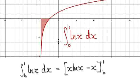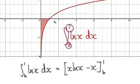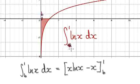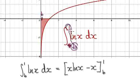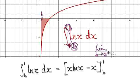We are trying to evaluate this from 0 to 1, but let's do it from an arbitrary point — let's say b. So let's integrate it from b to 1, and then later on we can take the limit as b heads towards 0 from the right-hand side.